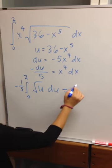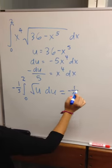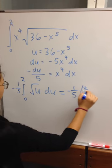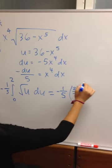Which is equal to negative 1 over 5, 2 thirds u to the 3 over 2.